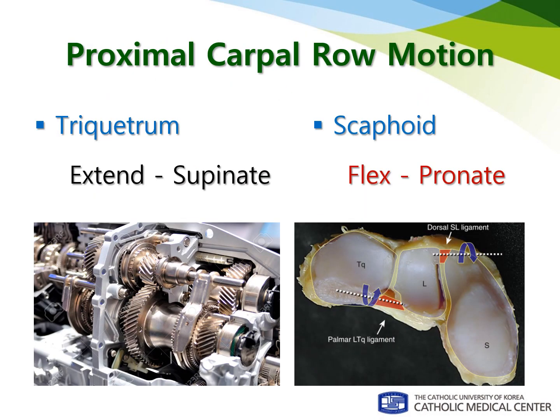I think the dorsal portion of the scapholunate intercarpal ligament is only a pivot point or gearbox of a car for scaphoid rotation, but we need an engine to actively extend the scaphoid, which in my opinion is the triquetrum.